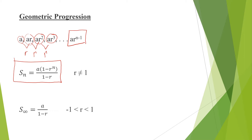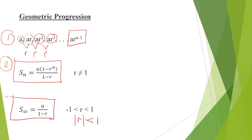If we want to find the sum to infinity of a geometric progression with starting value a and common ratio r, it is given by this formula. Take note that this formula is valid if and only if the absolute value of r is less than 1. These are the three most useful formulas when we deal with geometric progression. If we are well-versed with these formulas, we will be able to solve most problems involving geometric progression.